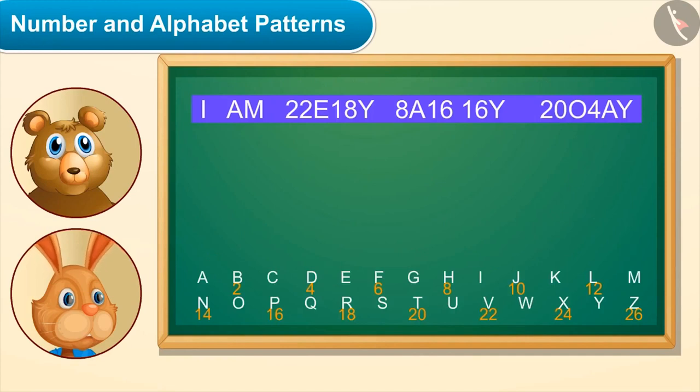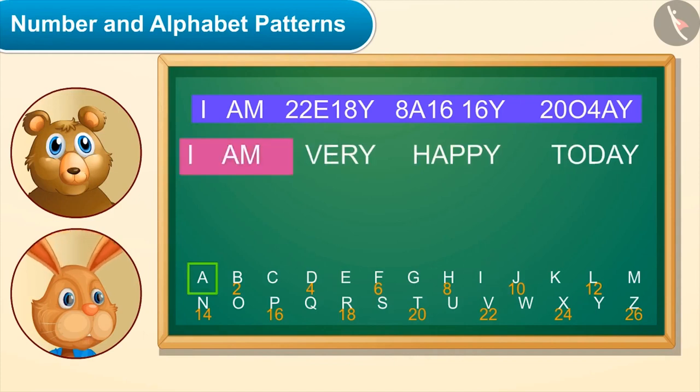Here take this. What is this? I wrote down whatever you said. As you can see, I have not given any numbers to I, A and M. They will be written as it is. Then for the next word, very, I have written V as 22, E as E itself, R as 18 and Y as Y itself. Then I have coded happy as 8 A 16 16 Y and today as 20 O 4 A Y. Oh wow! Now you say something and I will write it in code language.